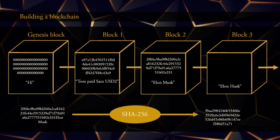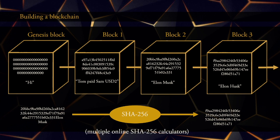Let us now link block number two and block number three together. This is done by computing the hash of block number two and putting the result into block number three. We take the content of block number two — the hash of block number one and the text string Elon Musk — put that into a single text string and compute the hash. That gives us F9AA2 and so on, which we copy into block number three. The only technical part here is finding the digital fingerprint of each block.